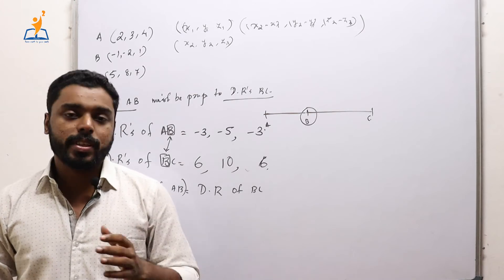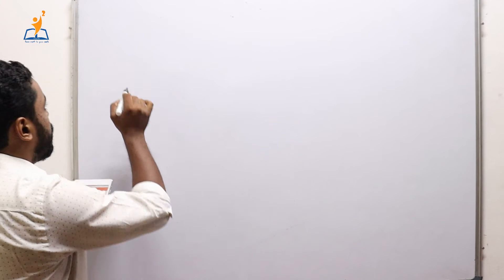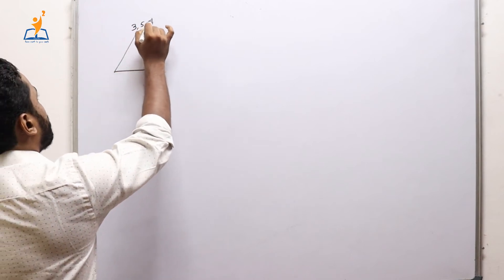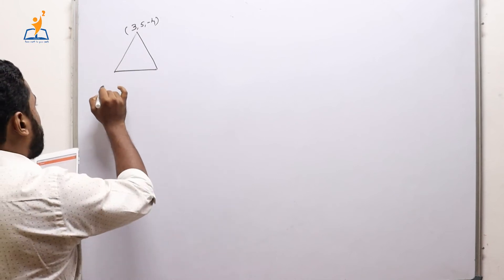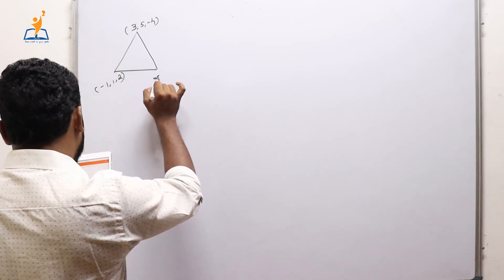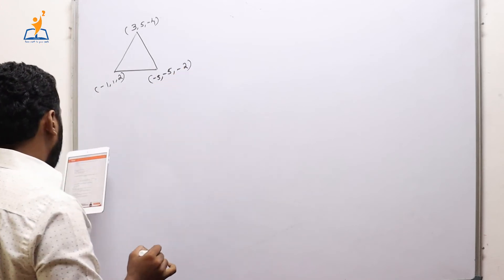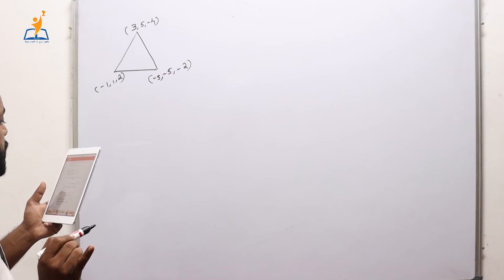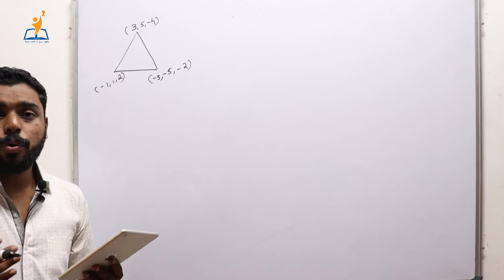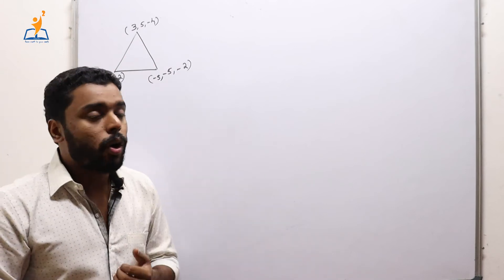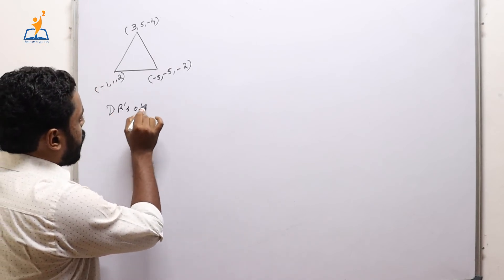The last question: find the direction cosines of the sides of the triangle whose vertices are A(3, 5, −4), B(−1, 1, 2), and C(−5, −5, −2). To find the direction cosines of the sides of the triangle, we first find the direction ratios of each side. Let us name the vertices as A, B, C and find direction ratios of AB, AC, and BC.